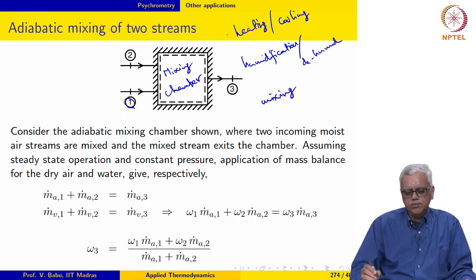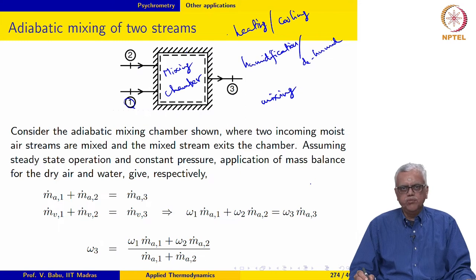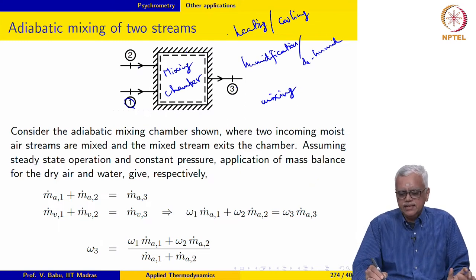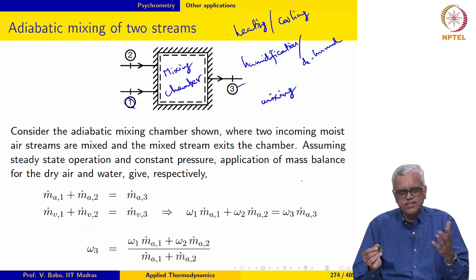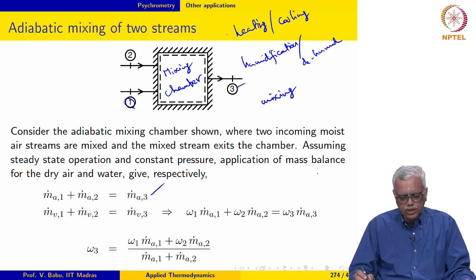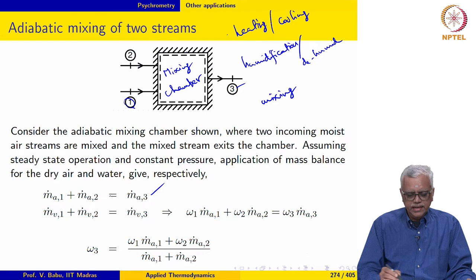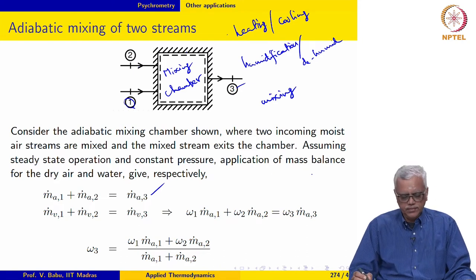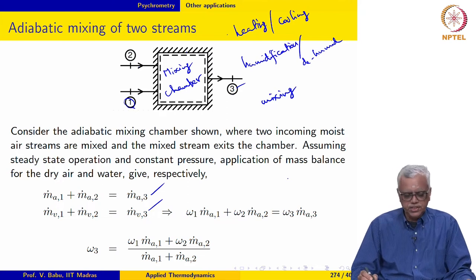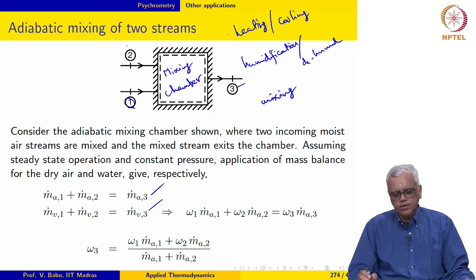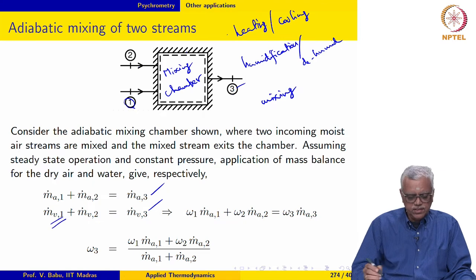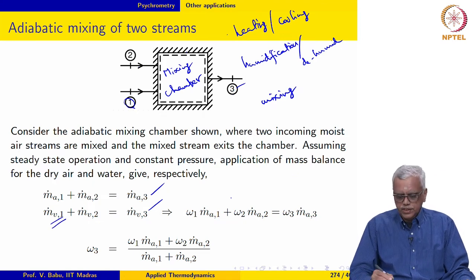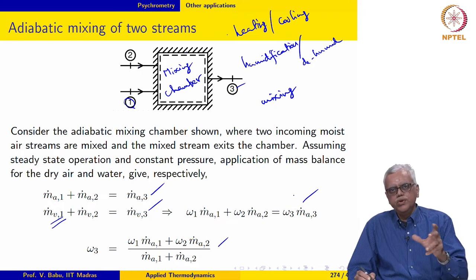Our idea is to control the temperature and humidity of stream 1 such that we get a desired value for temperature and humidity ratio of the exiting stream. If we do mass balance of dry air across the mixing chamber, we get m-dot-A1 plus m-dot-A2 equal to m-dot-A3. Water balance across the mixing chamber, assuming no condensation takes place, gives the amount of vapour coming in through 1 plus 2 equals the vapour leaving at 3.